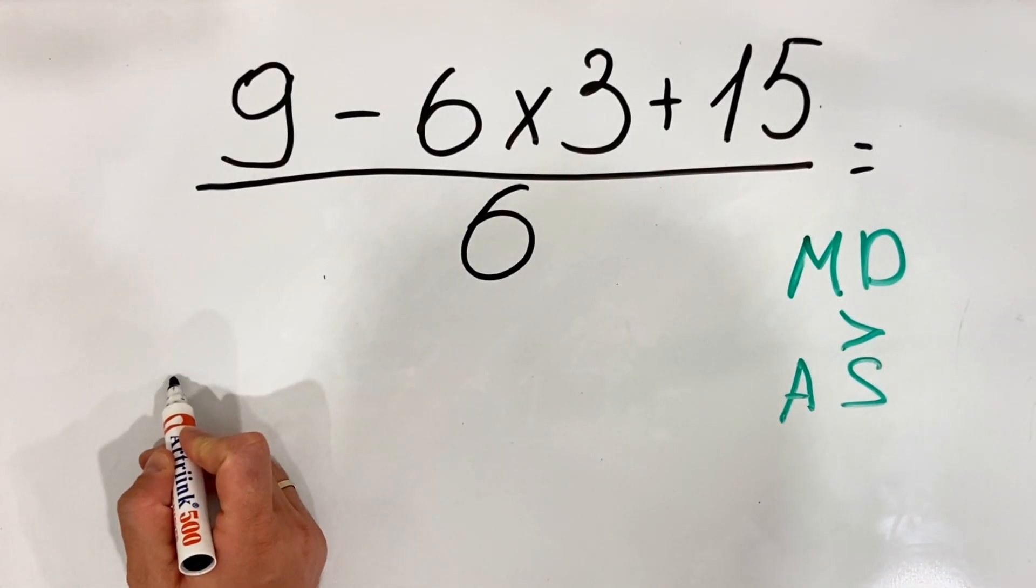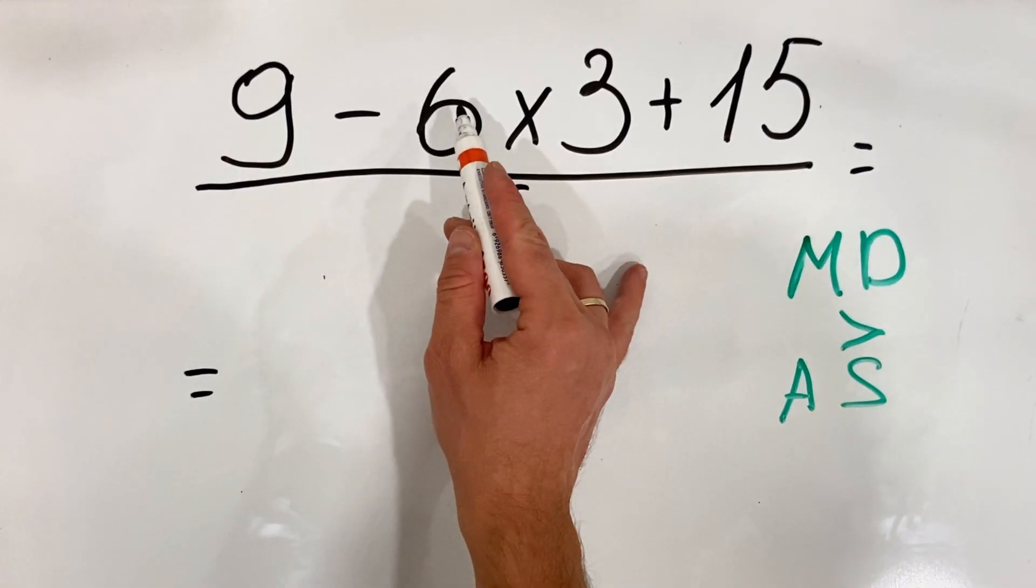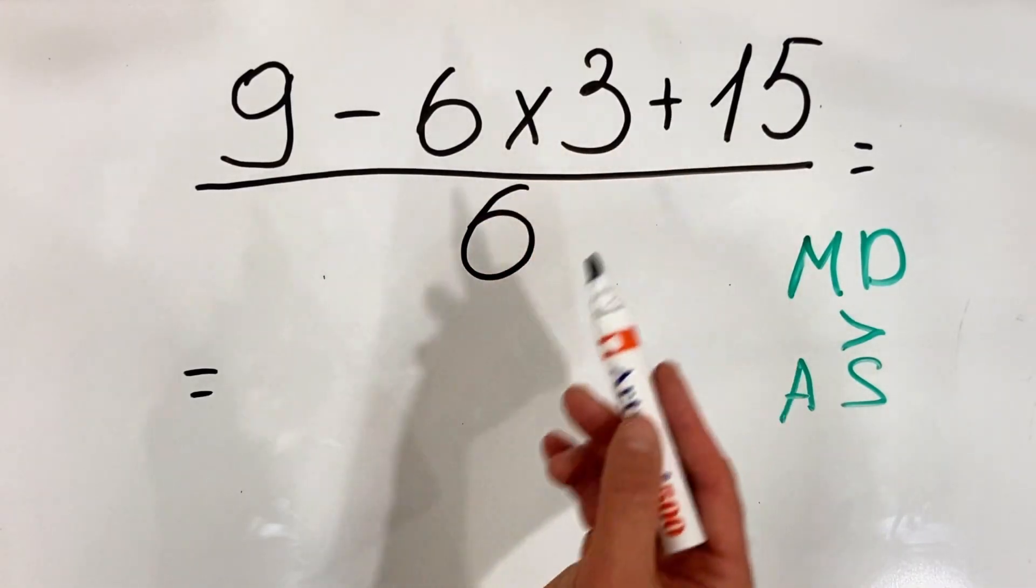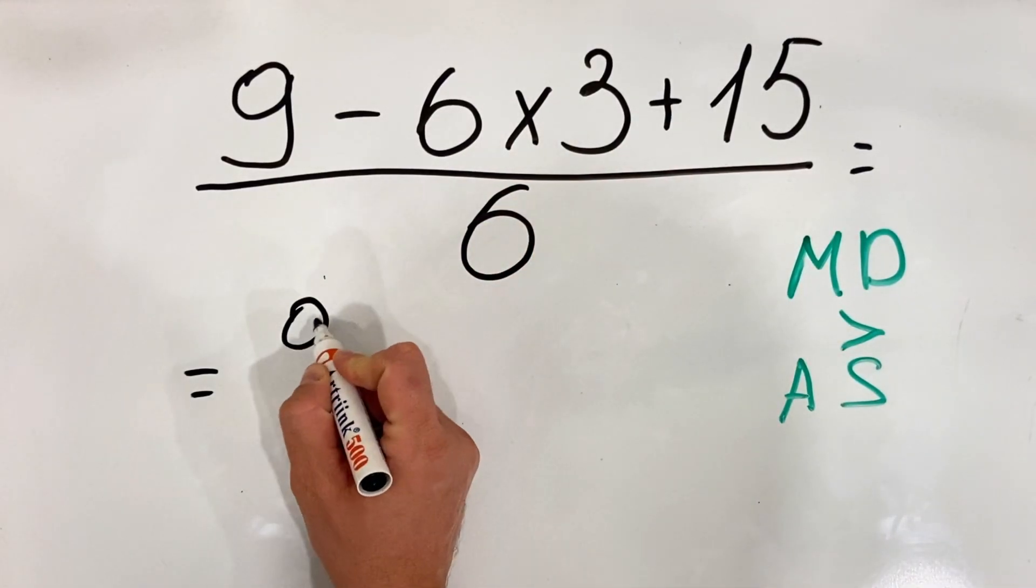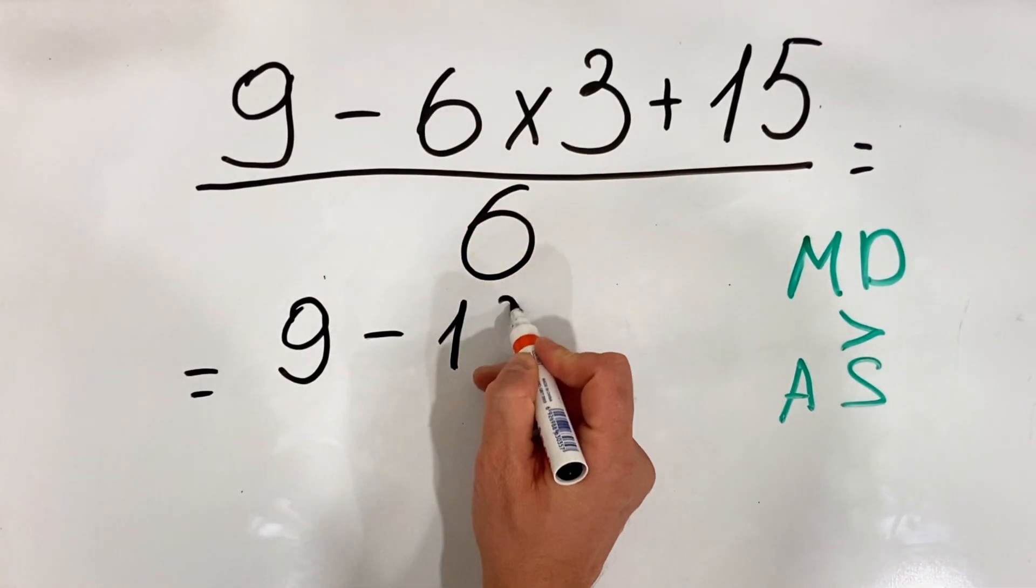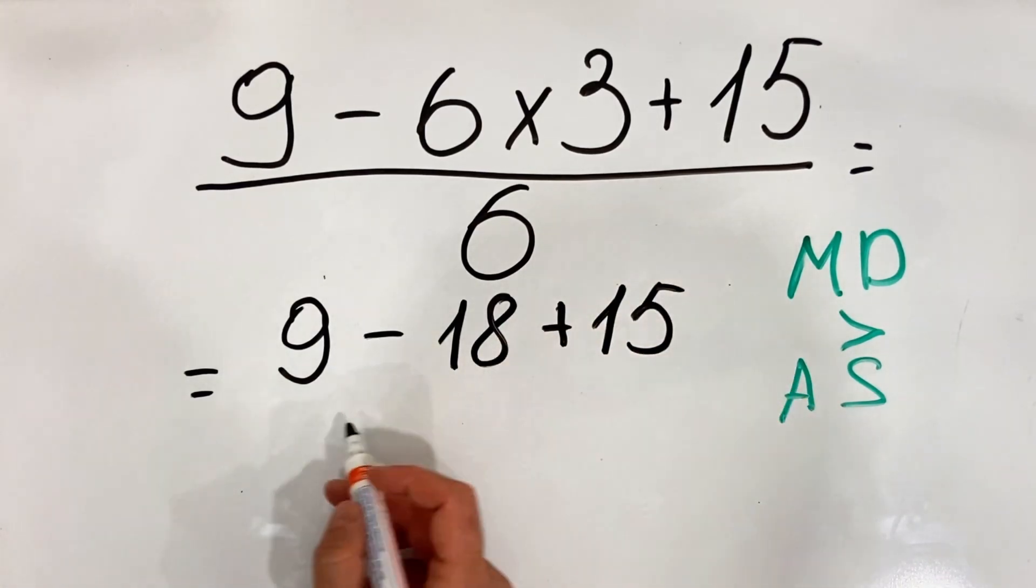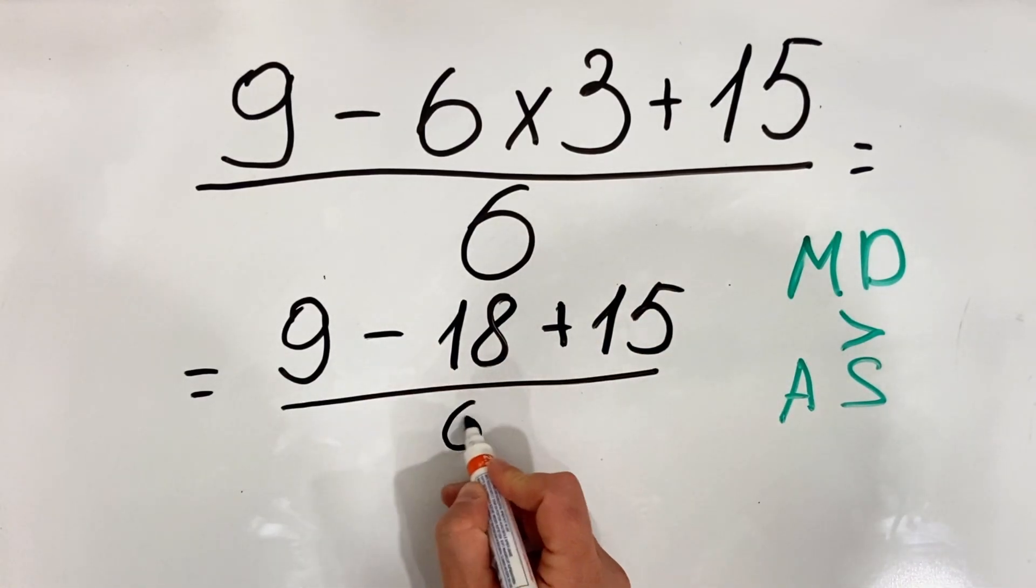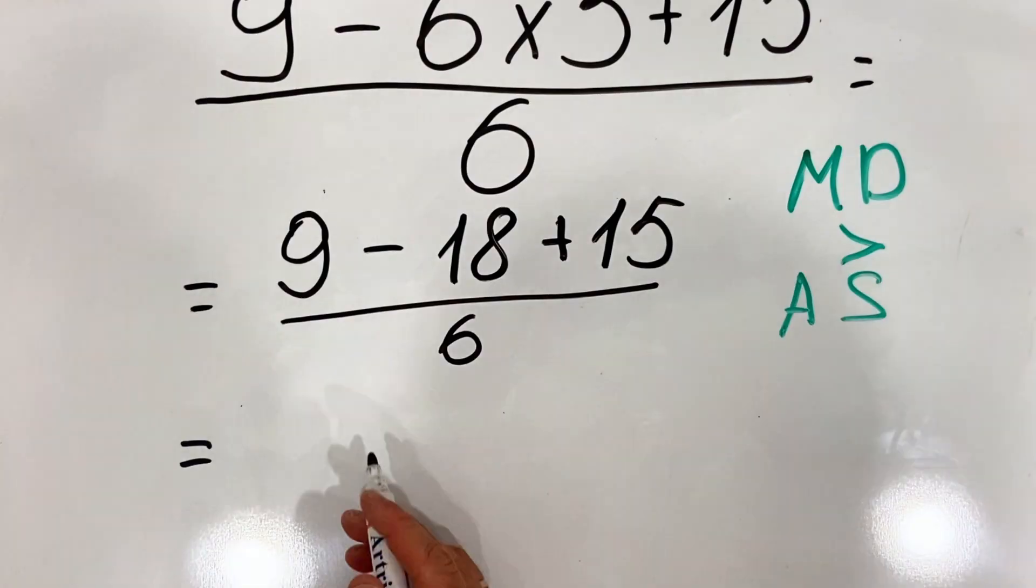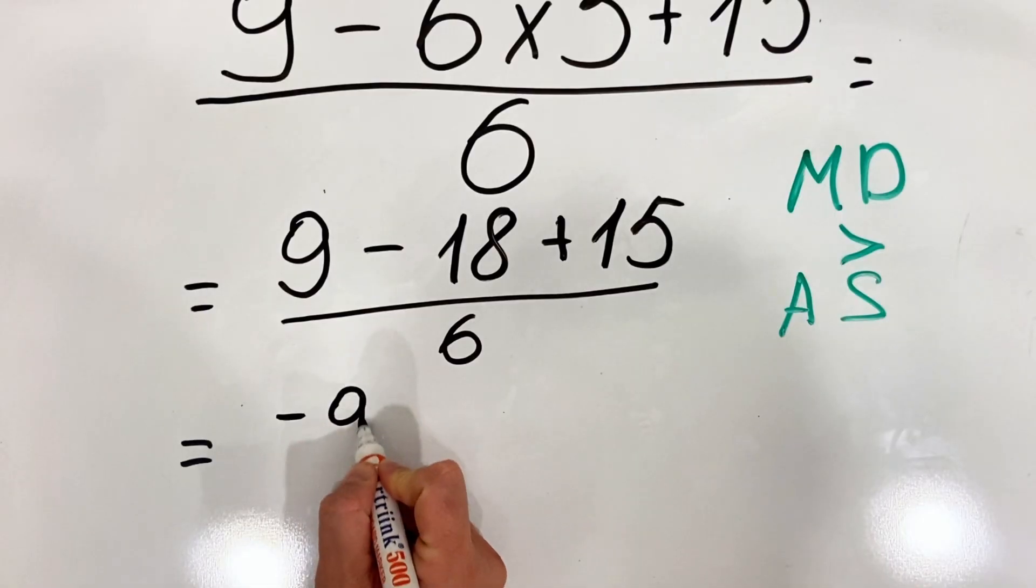Therefore, we first do multiplication, meaning we do 6 multiplied by 3. So we get 9 minus 6 multiplied by 3 is 18, plus 15 over 6. So we have 9 minus 18 is minus 9.